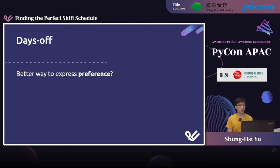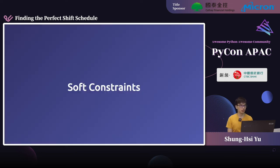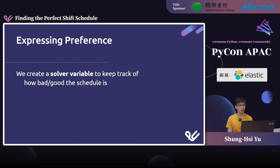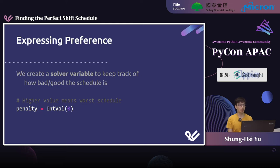There should be a better way to express preference — and indeed there is: soft constraints. What we've seen so far are hard constraints, which the solver is not allowed to violate. Soft constraints, on the other hand, can be violated in some cases. To use soft constraints, we create a solver variable called penalty to track how good or bad the schedule is. It starts from zero — a high value means the schedule is bad, a low value means it's good.